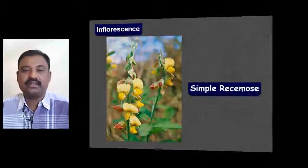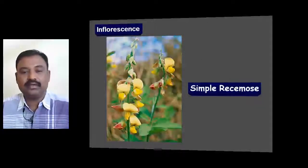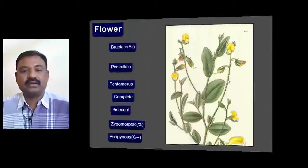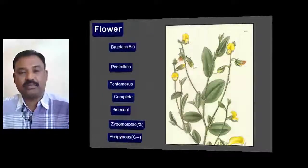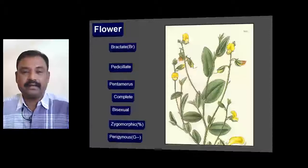The common inflorescence in Fabaceae is the simple racemose type of inflorescence. The flowers of Fabaceae are generally bractate.